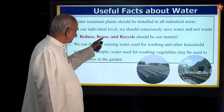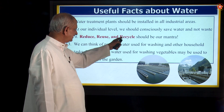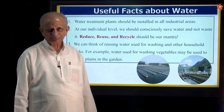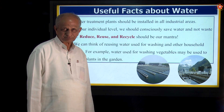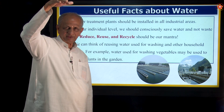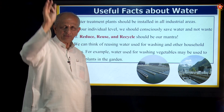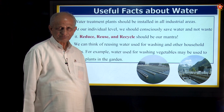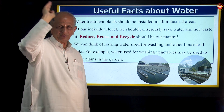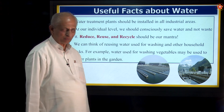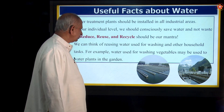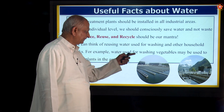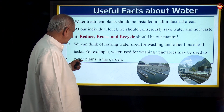Reducing is one thing; reusing means using water again; recycling means once it is used, it is recycled. For example, rainwater that falls on the top of the house can be made use of — it is called rainwater harvesting. They collect it on top of the houses and store it in tanks below. We can reuse water used for washing and other household tasks. For example, water used for washing vegetables may also be used to water plants in the garden.